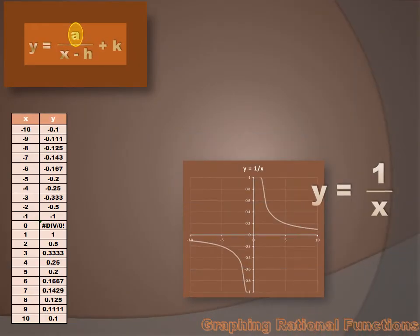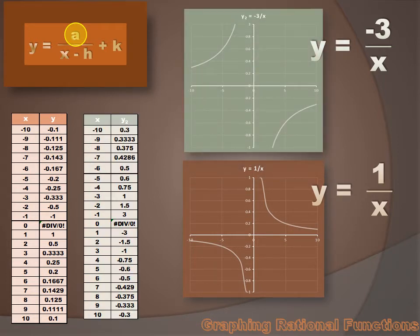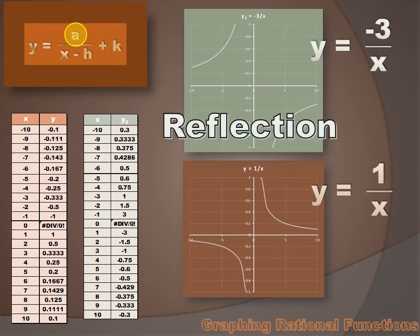Now let's look at the a value and see how changes in the a value would impact the parent graph. Let's say that instead of y equals 1 over x, we had y equals minus 3 over x. Let's create a table and graph it and see what changes we can discover. First thing I see is that in the parent graph, our curves are in the first and the third quadrants. But in this new graph, our curves are in the second and the fourth quadrant. We've reflected our graph around the y-axis.